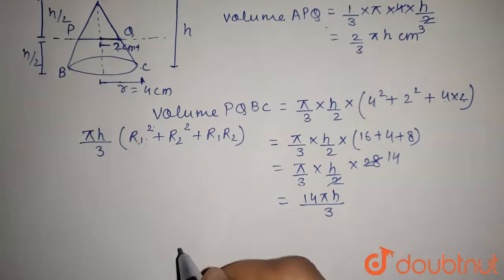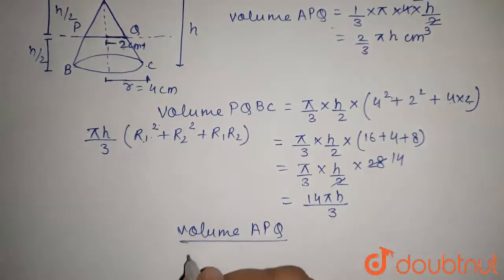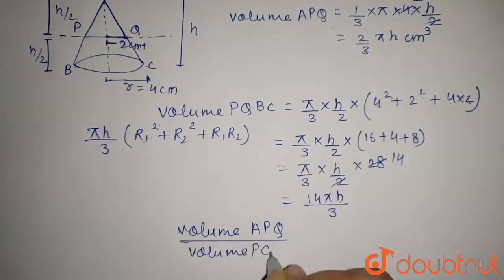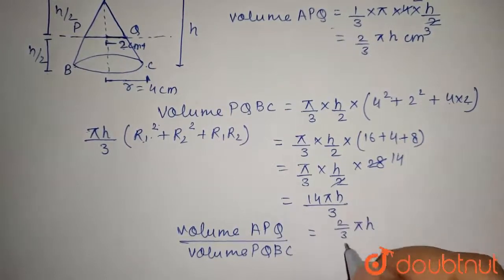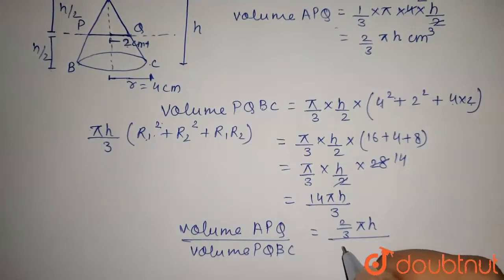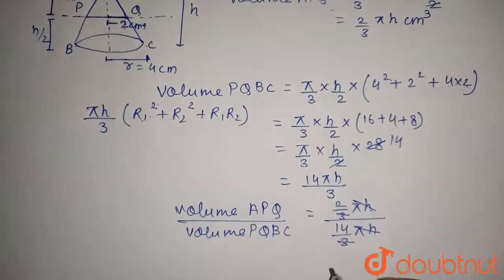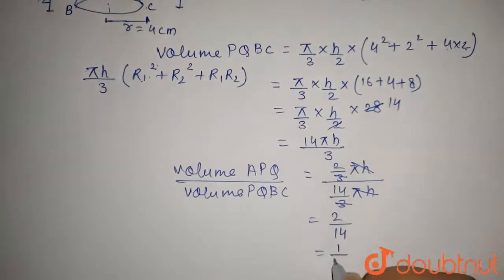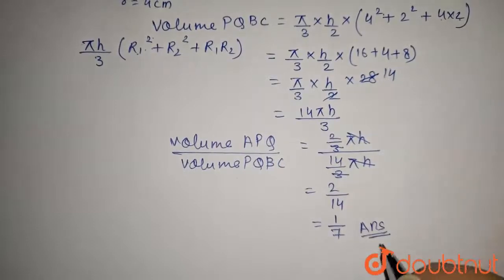Now comparing the two volumes: Volume of APQ / Volume of PQBC = (2πh/3) / (14πh/3). The πh and 3 terms cancel, giving 2/14, which simplifies to 1/7. So the ratio of the volume of the upper part to the lower part is 1:7.